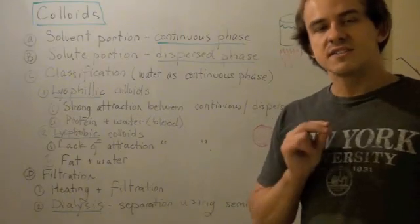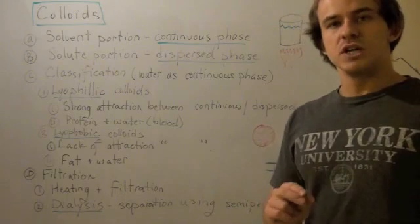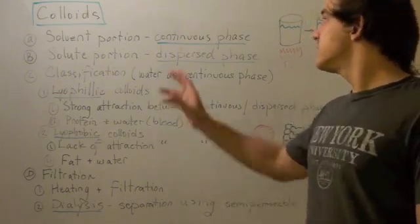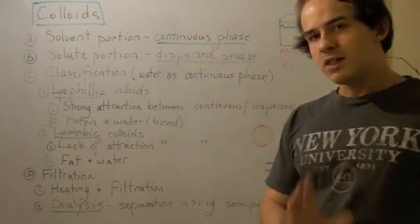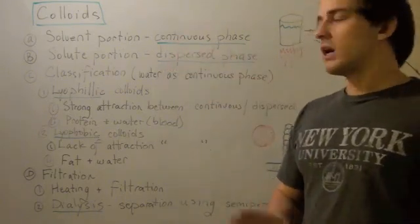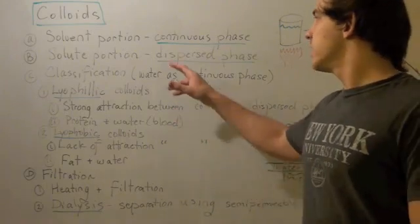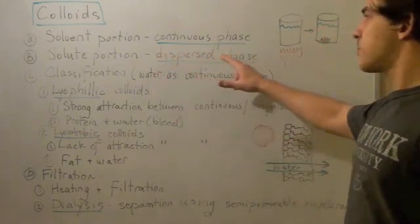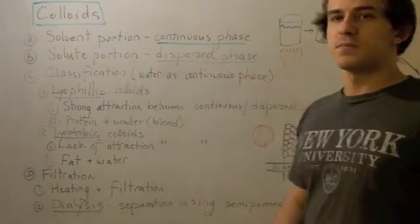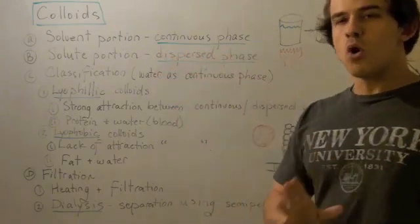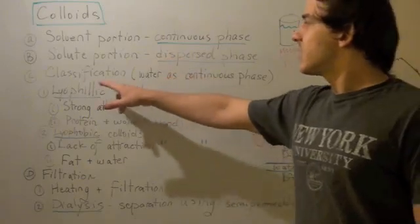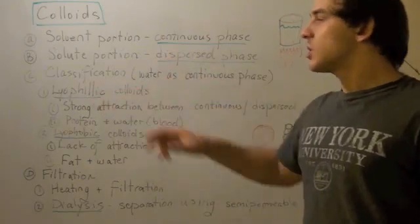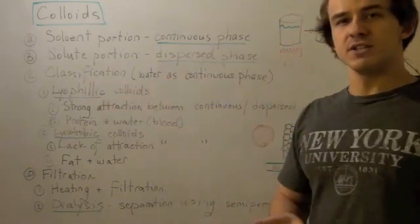The solvent portion of the colloid is called the continuous phase. The solid portion of the colloid is called the dispersed phase. When water is the solvent, classification occurs in two ways.